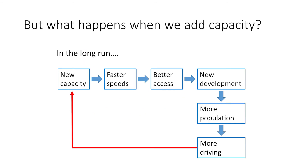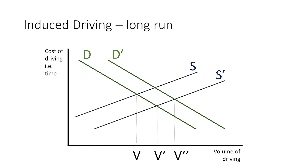What happens when we add capacity in the long run? We get additional effects. The new capacity leads to faster speeds, which creates better access for the land served by that freeway. That better access leads to development in those areas. New development can lead to more population as well as lower density development, and all of that can lead to more driving. Again, we get a vicious cycle. We can look at this through supply and demand curves: in the long run, what's happening is that the new capacity attracts development and lower-density development, effectively shifting the demand curve so that we get an even higher level of volume on the roads.